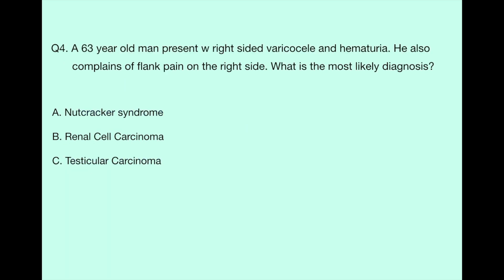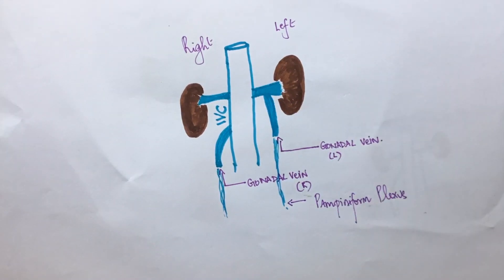Question number four: a 63-year-old male presents with right-sided varicocele and hematuria. He also complains of flank pain on the right side. What is the most likely diagnosis? Option A: nutcracker syndrome, Option B: renal carcinoma.